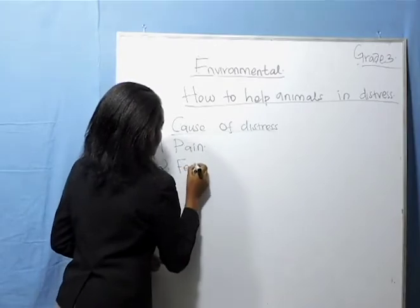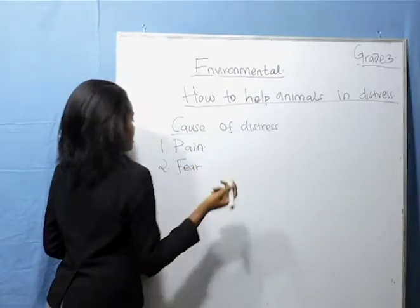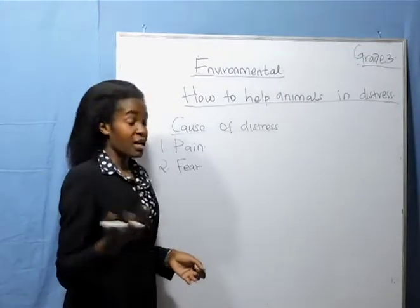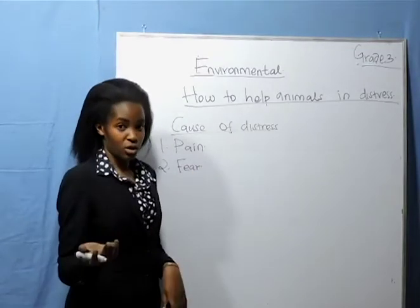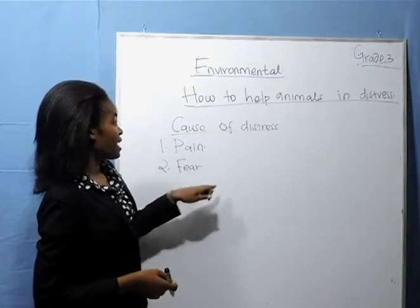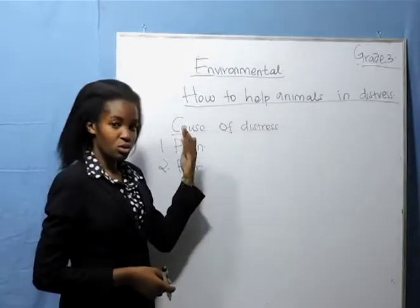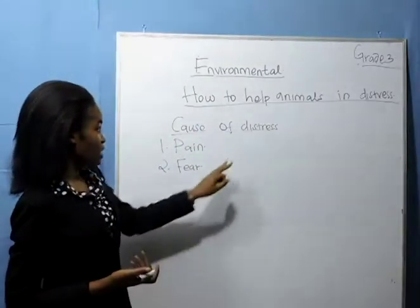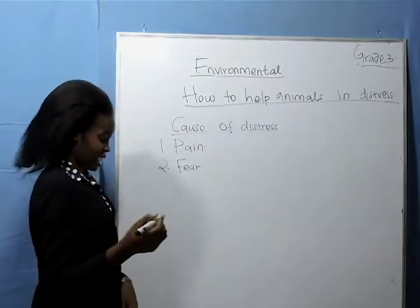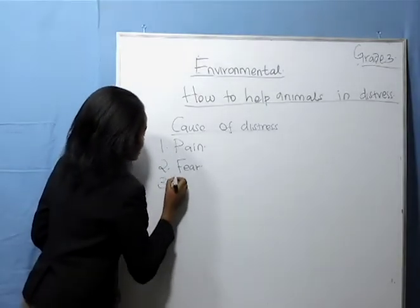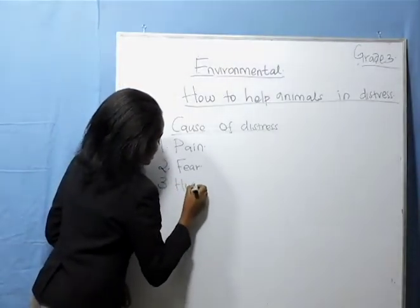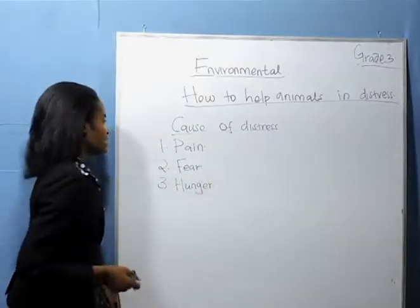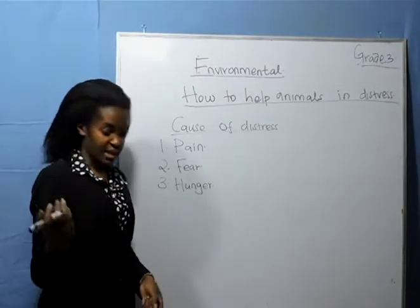Another cause is fear. For certain animals, like hens, they will be fearing wild dogs. Now they have been fearing, and they produce those sounds that we have learned to show that they are in distress. And the last cause is harm — when the animal is in harm, that is also a cause of distress.